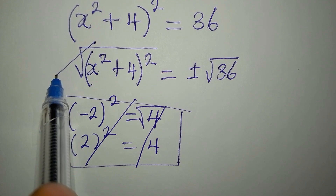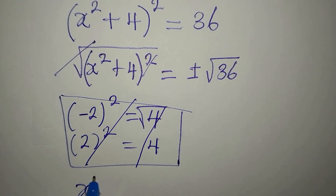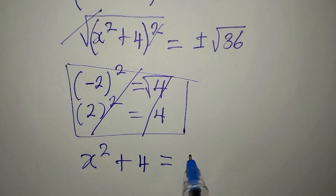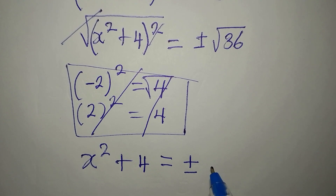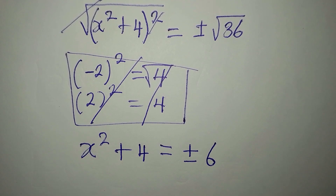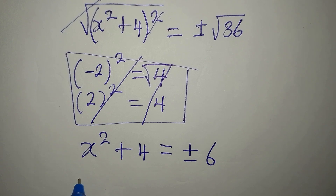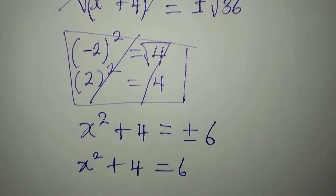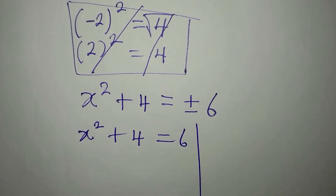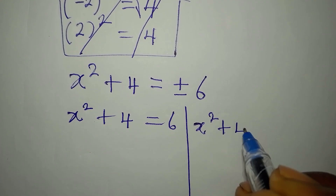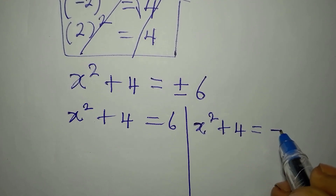From here, the square root and the square cancel, so we have x squared plus 4 on the left equal to plus or minus the square root of 36, which is 6. We now have two values — one positive and one negative — giving us two equations. The first equation is x squared plus 4 equals 6, and the second equation is x squared plus 4 equals negative 6.